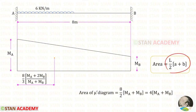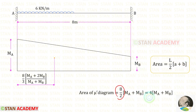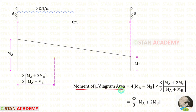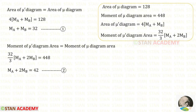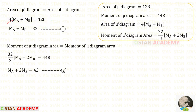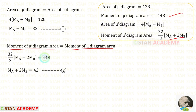For the area of the Mμ' diagram: L/2 × (A + B), where L = 8, A = MA, B = MB, giving 4(MA + MB). For the moment of the Mμ' diagram area, we multiply the area by the centroid. After simplification, eliminating MA + MB, we get 4 × 8 = 32. We know that the area of Mμ' diagram equals the area of Mμ diagram. Applying: 4(MA + MB) = 128, so MA + MB = 32 — this is Equation 1. The moment condition gives a second equation.